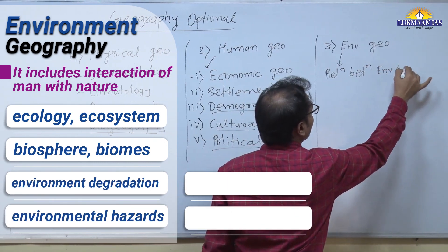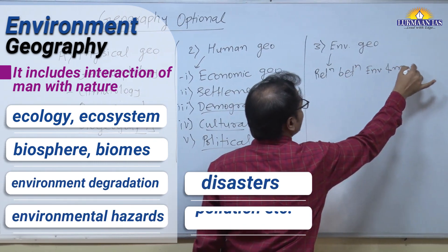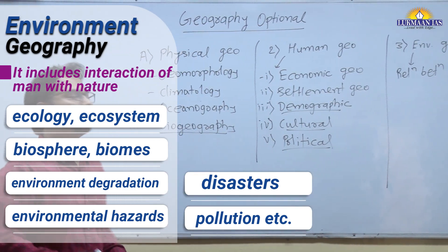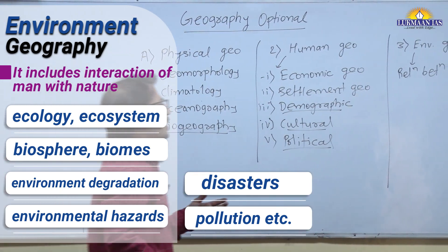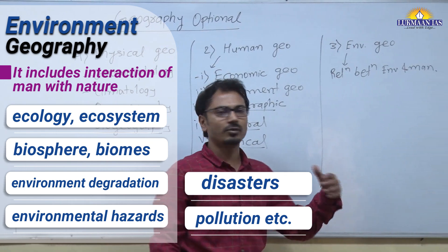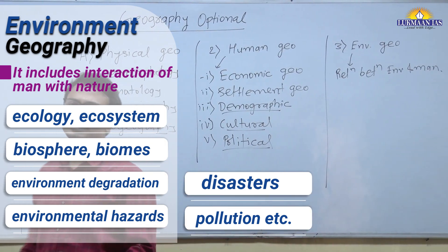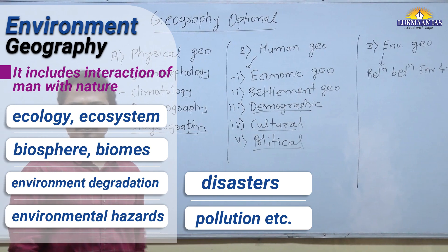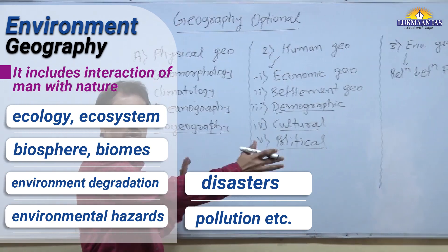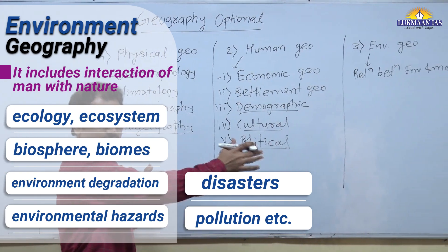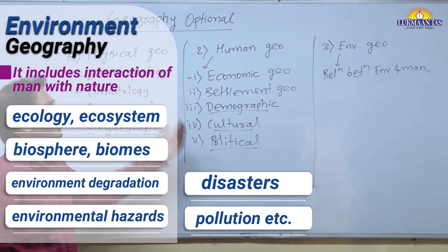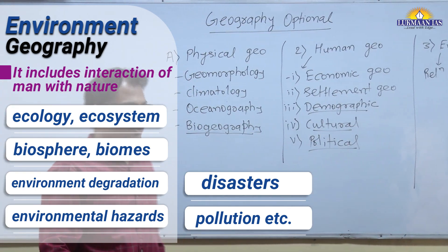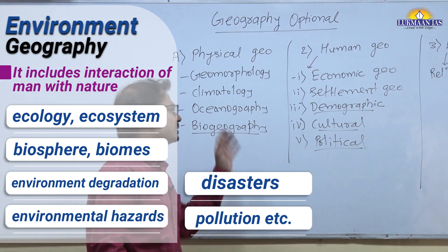In environmental geography, we study the relationship between environment and man — ecology, ecosystem, environmental pollution, and environmental degradation. This is the brief overview of the syllabus in layman's language. The detailed syllabus is provided by UPSC itself.